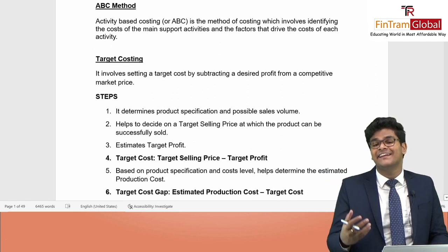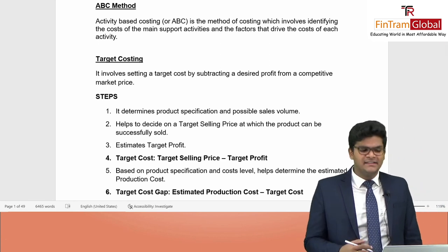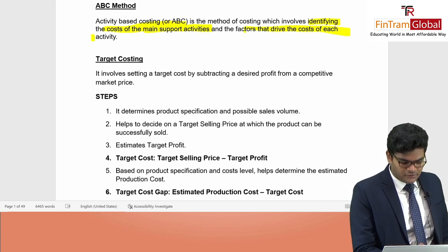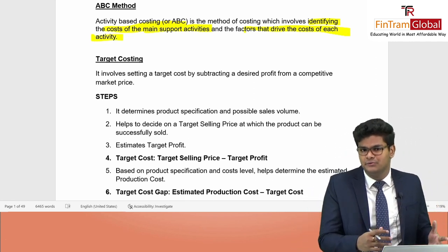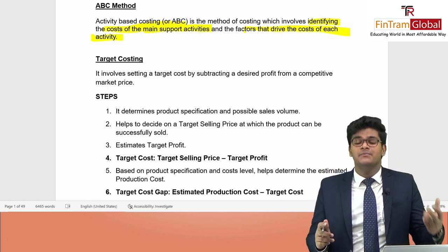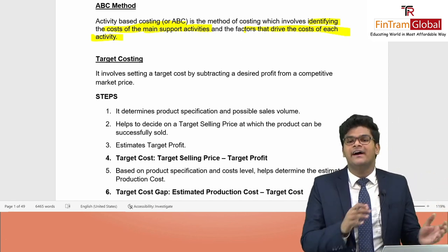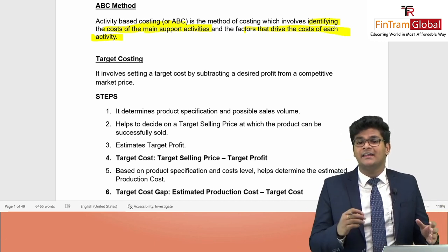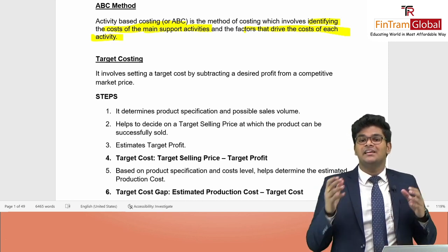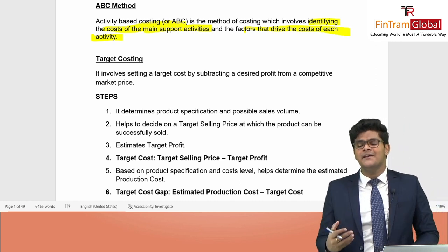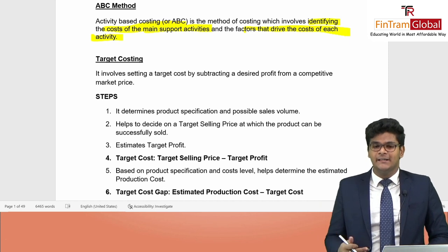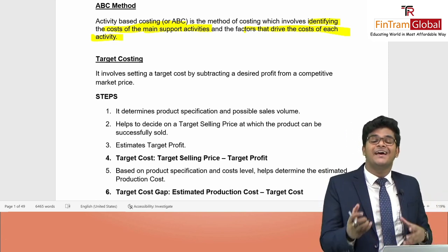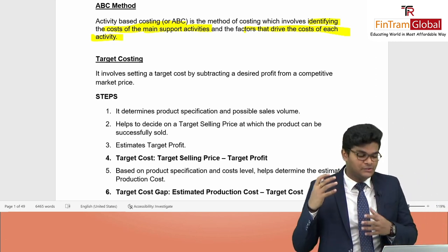Moving on, we also have ABC costing — Activity-Based Costing. ABC is a method of costing which involves identifying the cost of the main support activities and the factors that drive the cost of each activity. In absorption costing, we take total overheads and divide by machine hours or labor hours. The problem is we may not allocate the appropriate amount of cost to the appropriate product or department. In ABC, we look at the driving factors of cost and allocate cost depending upon those driving factors for each product line.